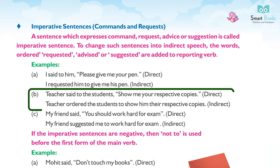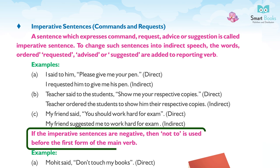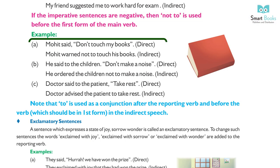More imperative examples: (b) Teacher said to the students, 'Show me your respective copies.' (Direct) → Teacher ordered the students to show him their respective copies. (Indirect) (c) My friend said, 'You should work hard for the exam.' (Direct) → My friend suggested me to work hard for the exam. (Indirect) If the imperative sentence is negative, 'not to' is used before the first form of the main verb.